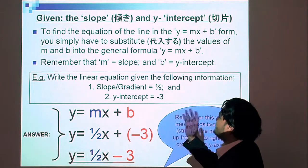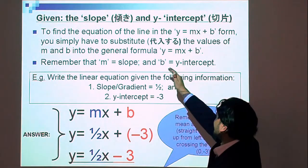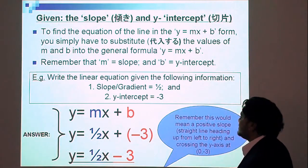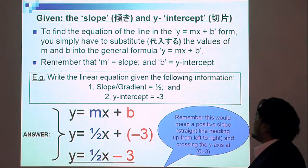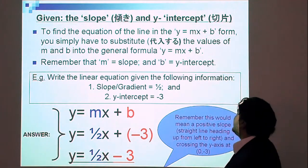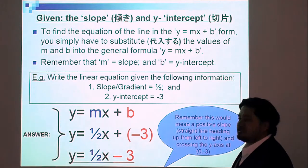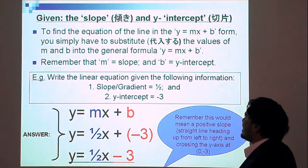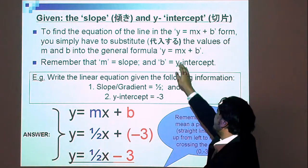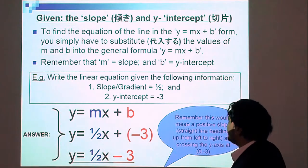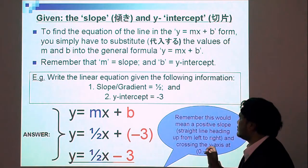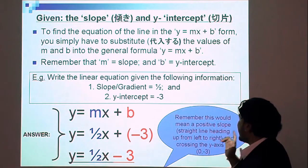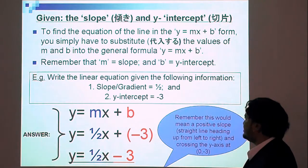Our first example: if we are given the slope and the y-intercept, what is the linear equation? To find the equation of the line in the form y equals mx plus b, you simply have to substitute the values of m and b into the general formula. Remember that m is equal to the slope or the gradient, and b is equal to the y-intercept.